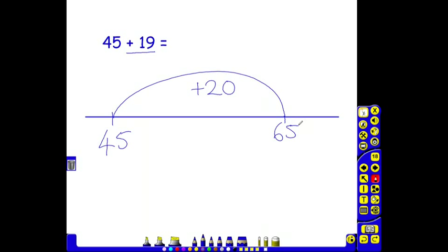Now I've got to adjust. I've added on 20. I only needed to add on 19, so I've added an extra 1. I now need to take 1 off to get to my actual answer of 64. So my answer to 45 add 19 is 64.